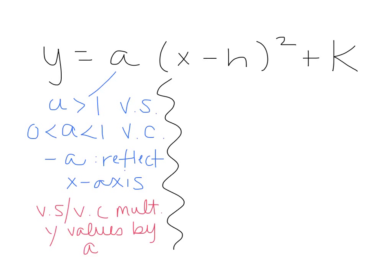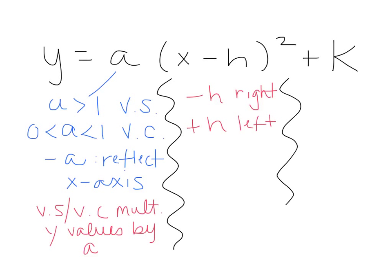If it's minus a number on the inside of your parentheses, same as with absolute value, it is going to move the graph to the right. Remember, that's always the opposite of what you're used to thinking. If it's plus a number on the inside, it's going to move it to the left. If it's plus a number at the end, it moves the graph up. If it's minus a number at the end, it moves the graph down.